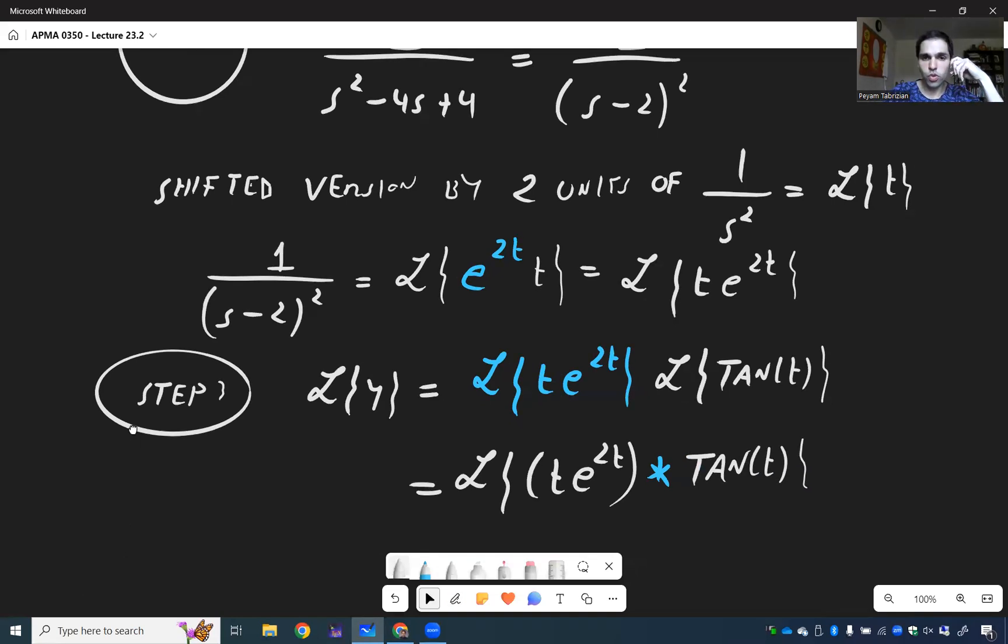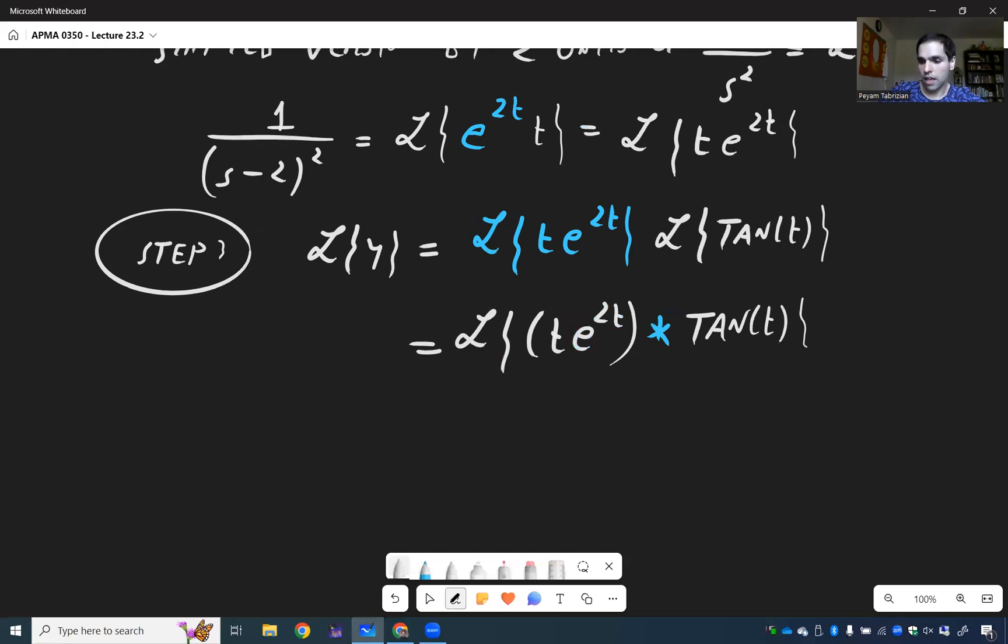And so what is our solution? Well, y is t e to the 2t convolved with tangent of t. And again, please write this as an integral.